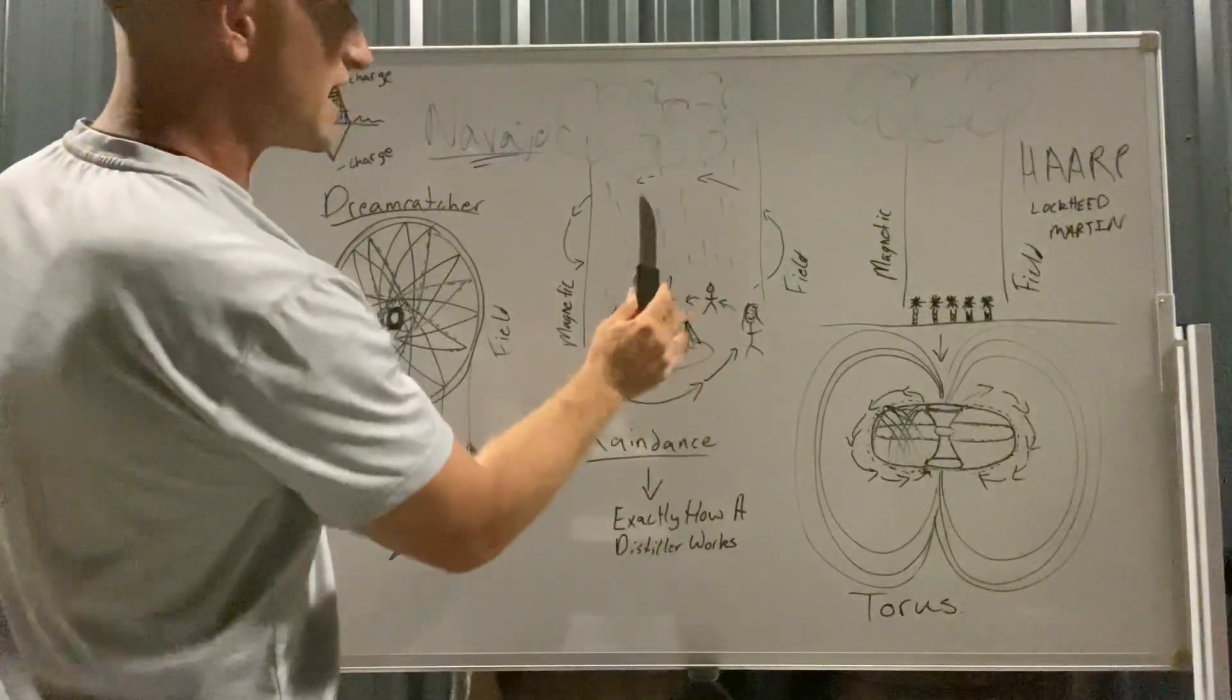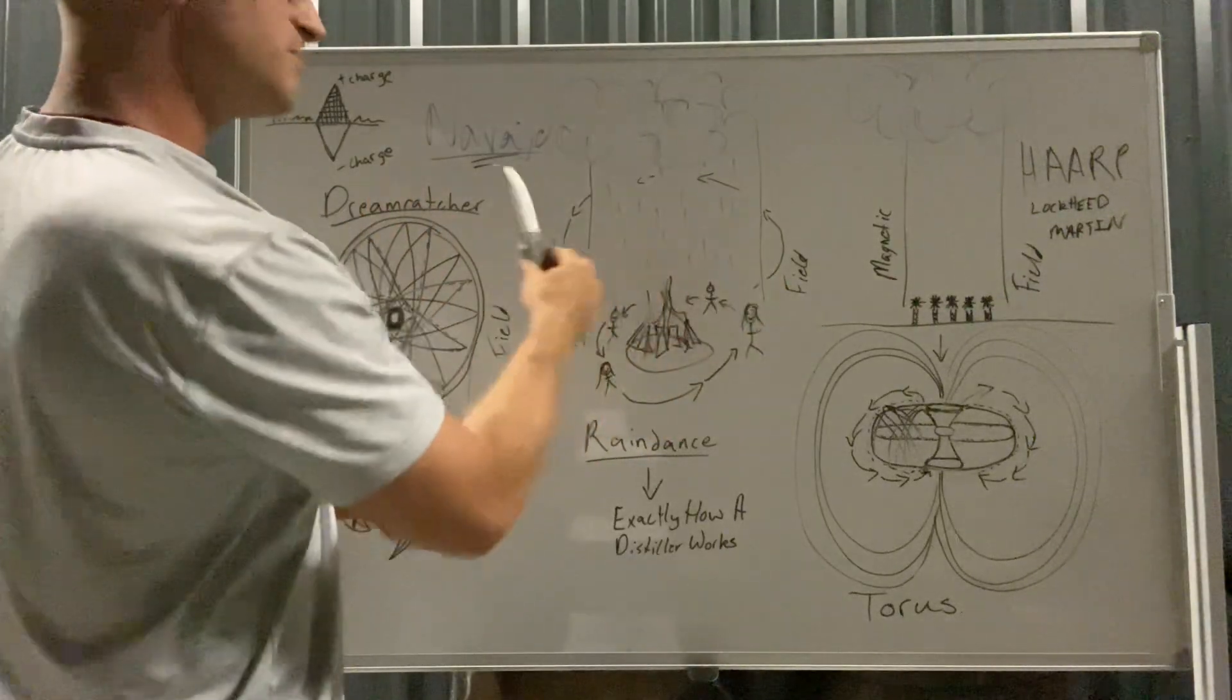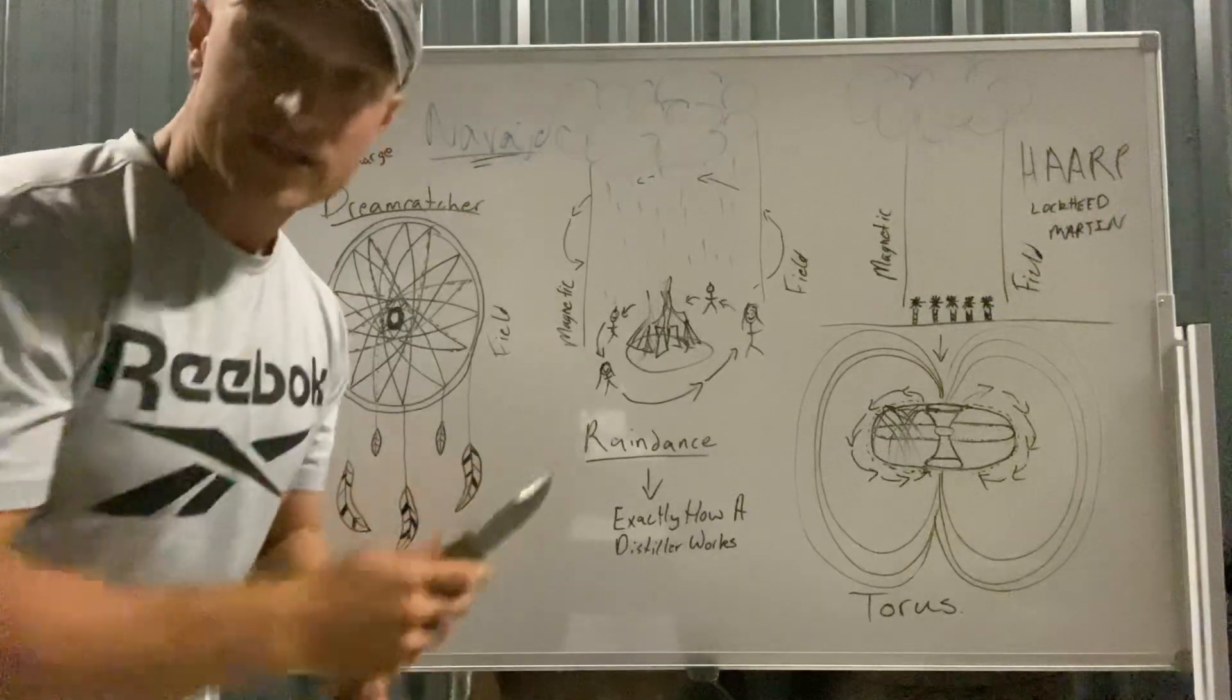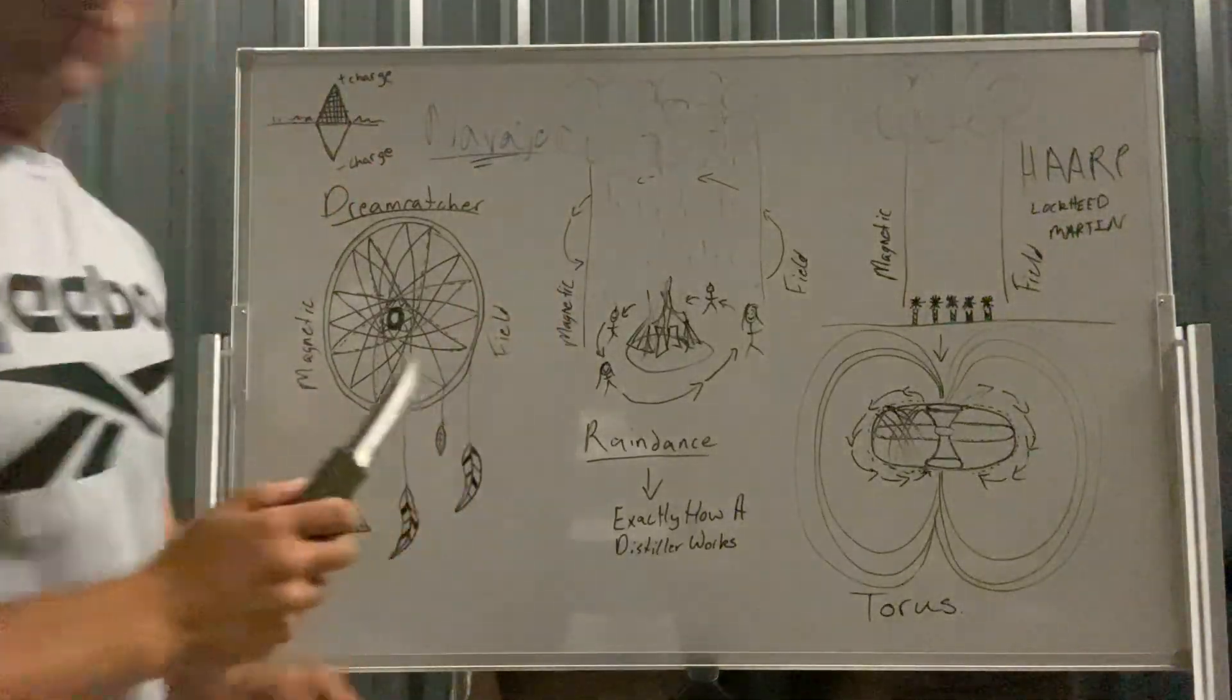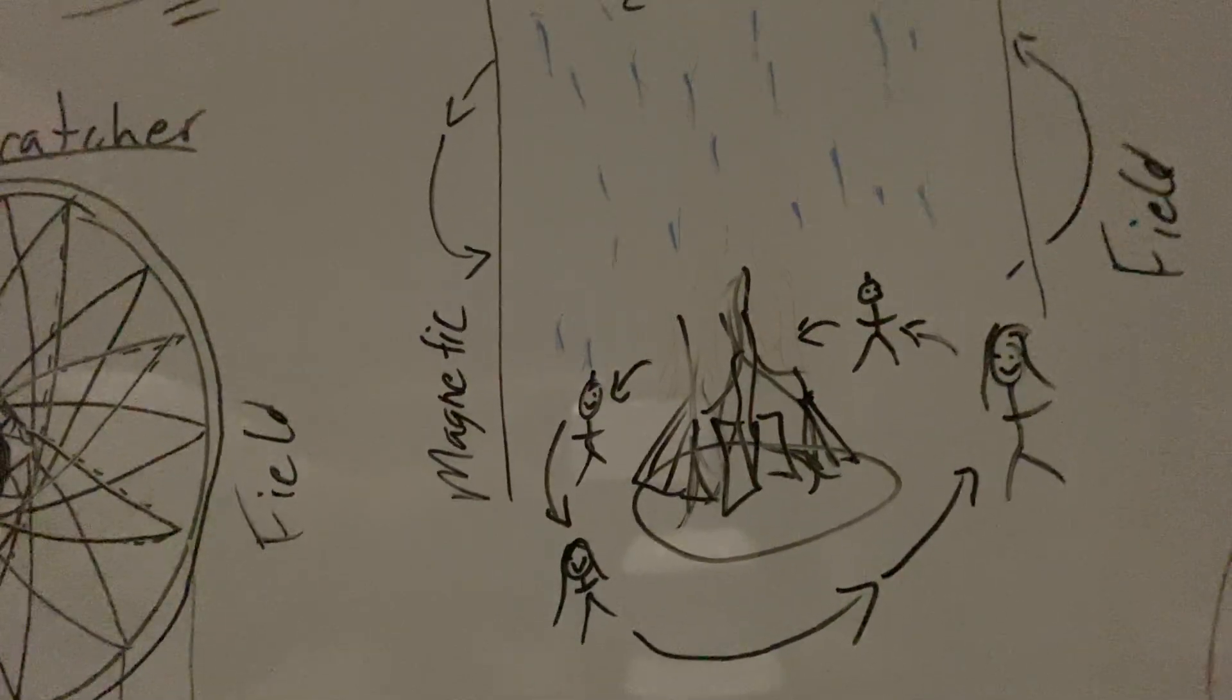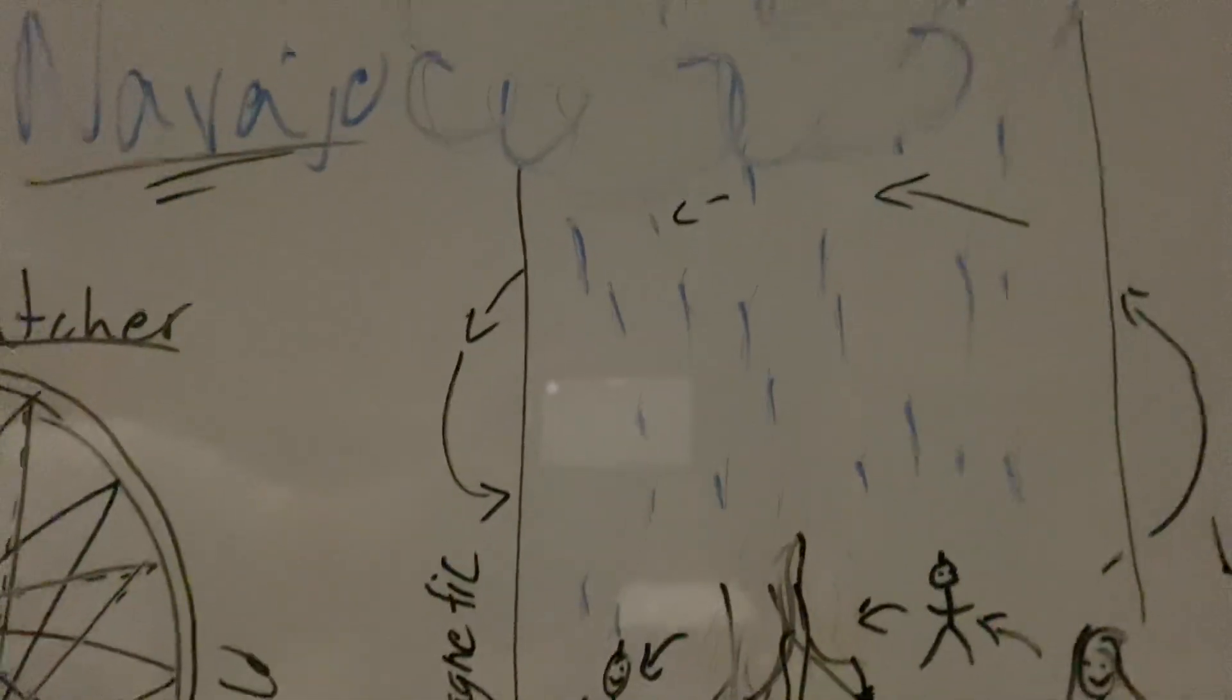This is no different than how a distiller works. It's very similar. They're just creating that heating element. This is the heating element. It's going to rise and they're directing it using the vortex. That's how they're controlling it going up. They're using beating of the drums and cool stuff like that for their intentions of their energy that they're sending up to create this rainstorm. I don't think it's BS. I think it was legit. I think that's what rain dances really were.